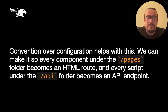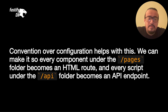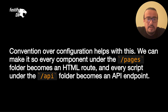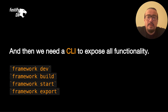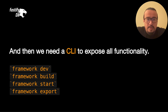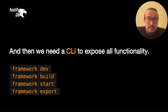Convention over configuration helps with this. We can make it so every component under the Pages folder becomes an HTML route, and every script under the API folder becomes an API endpoint. Sound familiar? And then we need a CLI to expose all functionality. Most frameworks have a dev command, a build command, a start command, or something similar.